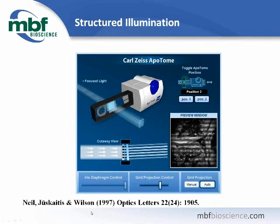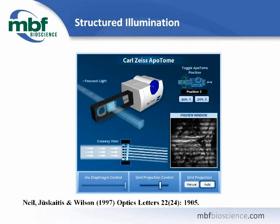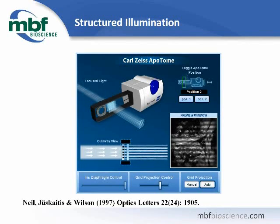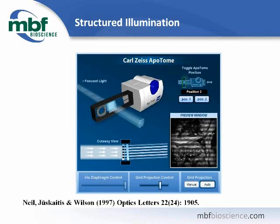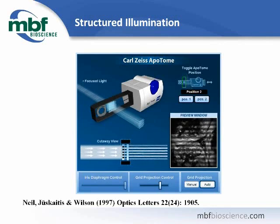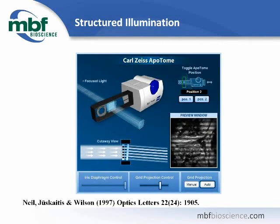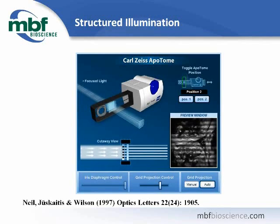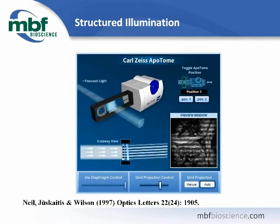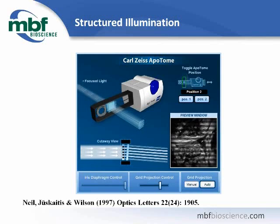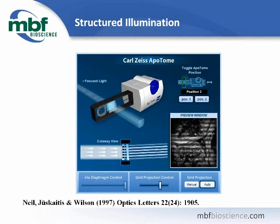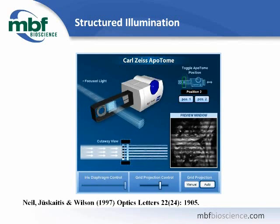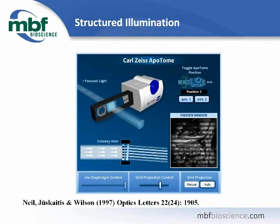I would also like to recommend reading this paper from Tony Wilson's group at Oxford. This is an early paper on structured illumination and goes into detail about the theory and mathematics involved in this particular strategy. Now we can illustrate structured illumination imaging with the Zeiss Apatome. The strategy is to capture three or more wide-field images with the grid pattern projected into the focal plane of the objective. These component images are then analyzed, out-of-focus light is removed with the grid lines, and the final image is comprised of only in-focus light.